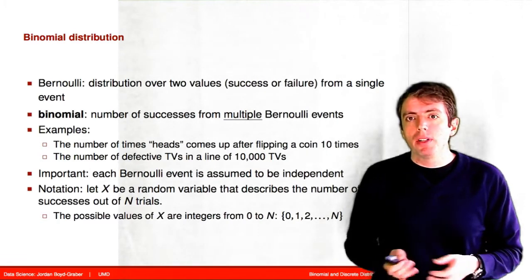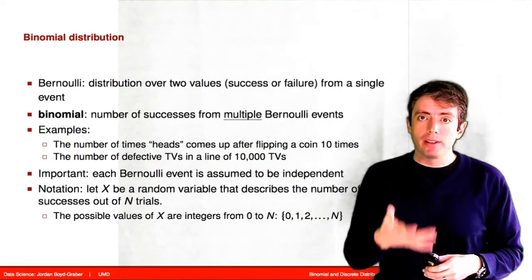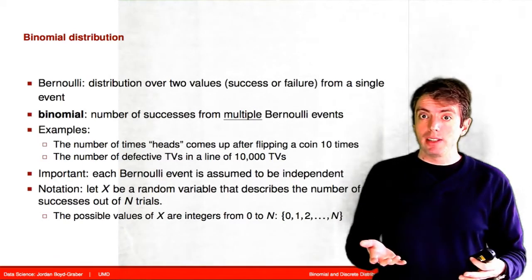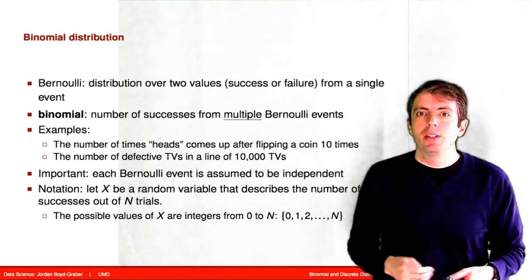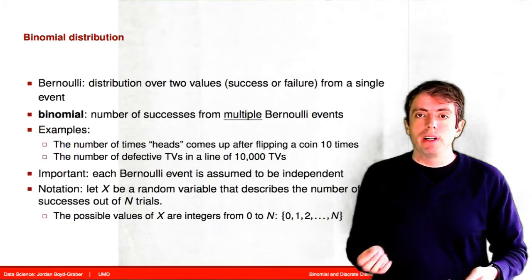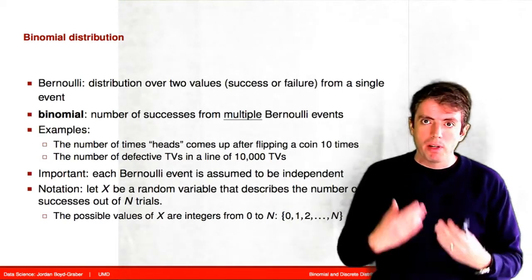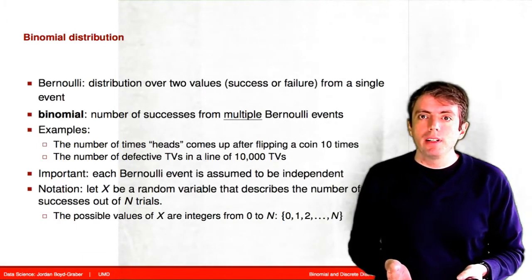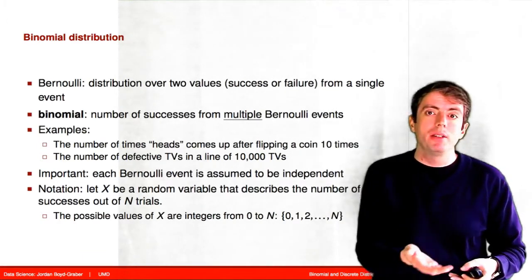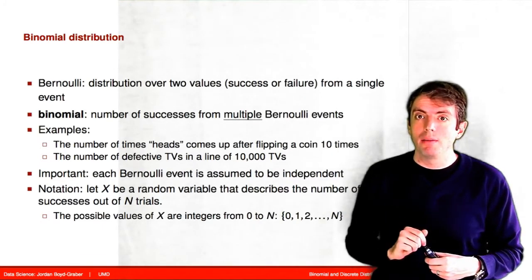For example, if you have one coin and you're trying to figure out whether it's fair or not, a single coin flip is not going to tell you that. You could get heads or tails. And let's say that it's an unfair coin and tails comes up with probability 0.995 — a single coin flip that comes up tails will not tell you whether it's an unfair coin or not. You need to try it many times.